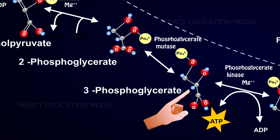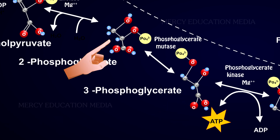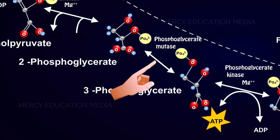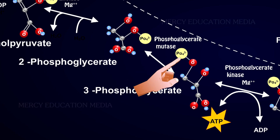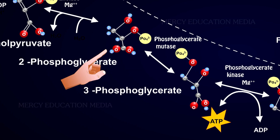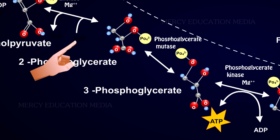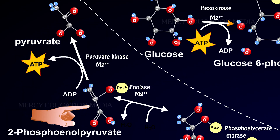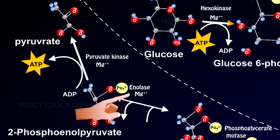A molecule of 3-phosphoglyceric acid is converted into 2-phosphoglyceric acid by phosphoglyceric mutase, shifting the phosphate group from the 3rd carbon to the 2nd carbon. Then 2-phosphoglyceric acid is dehydrated to 2-phosphoenolpyruvic acid by enolase.